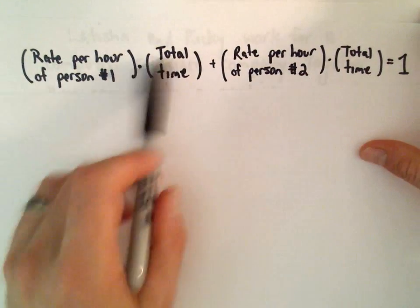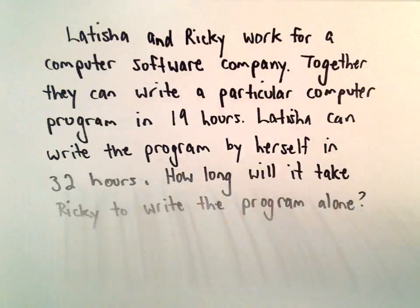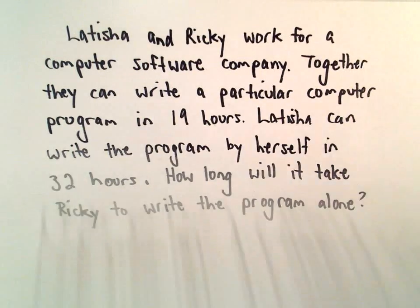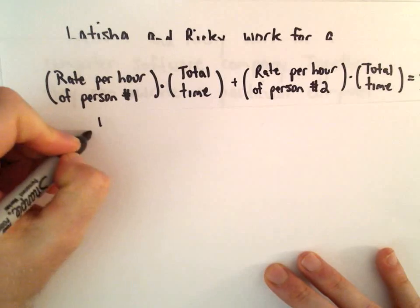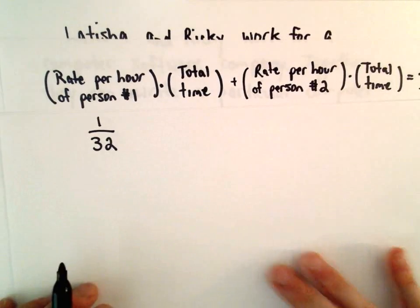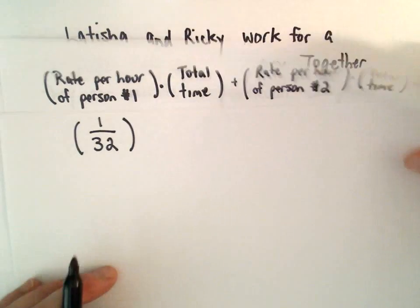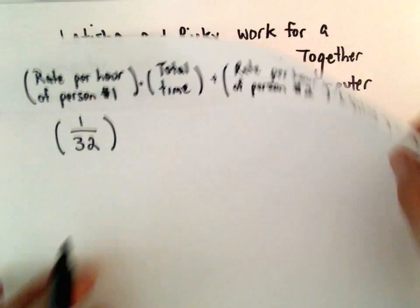So maybe the first person here, we'll let that represent Letitia. So by herself, Letitia can write the program in 32 hours. So that means her rate per hour, she could do 1 over 32. We said the total time for them working together to get the job done, the total time was 19 hours.